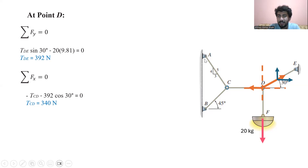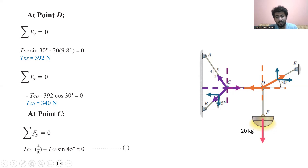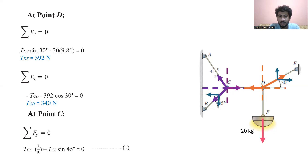To find the tension force in cord AC and cord CB, I can take point C. At point C, the cord CD force is acting towards the positive x direction. Cord AC force is acting in the negative y and negative x direction, and cord BC force is acting in the positive y and negative x direction. If I take the force in the y direction, I get the tension in cord BC with the sine component, which is 4 over 5, since sine equals perpendicular over hypotenuse, with the tension in cord AC at angle 45 degrees.